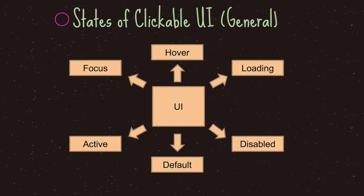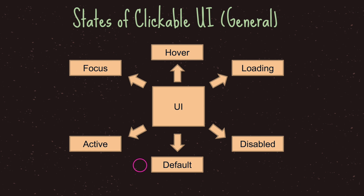Before we get into buttons, let's take a quick look at the states of clickable UI items in general. Generally there are many states, but I just want to introduce six general states you may find with UI items. The most common one is the default state, which means when your UI item — for example, your button — is not doing anything, it will show this default state.